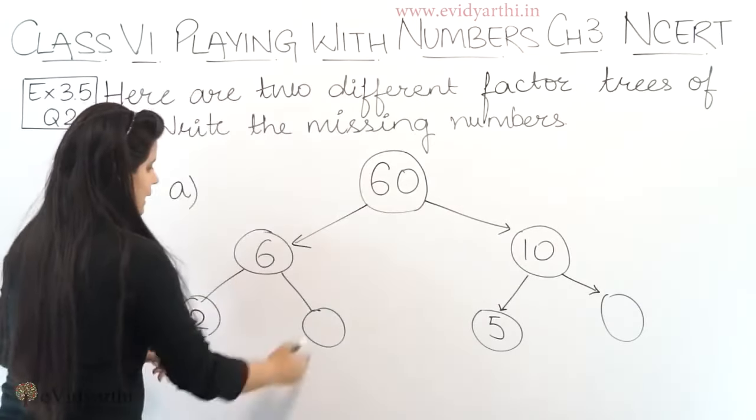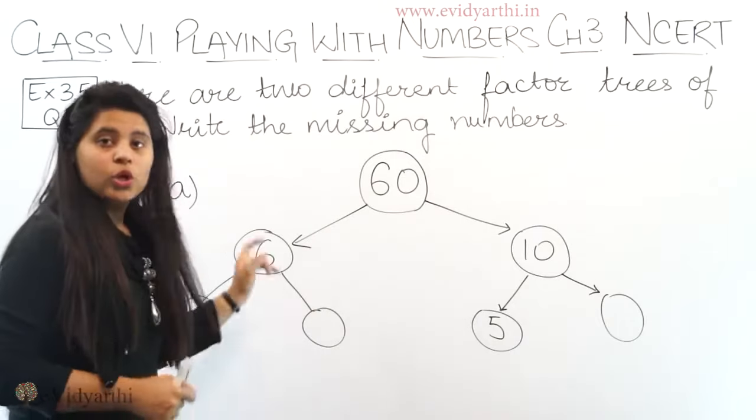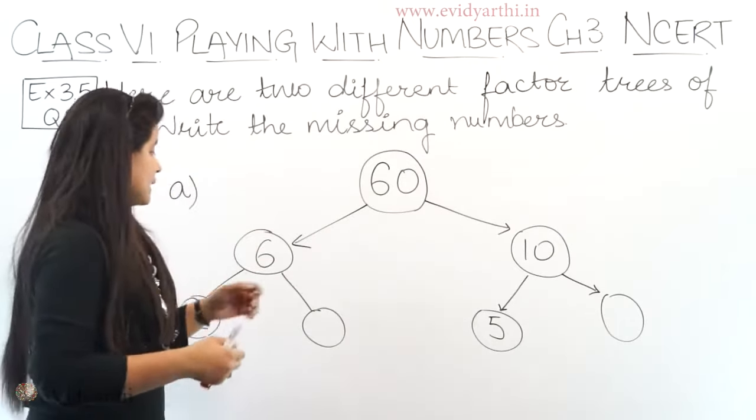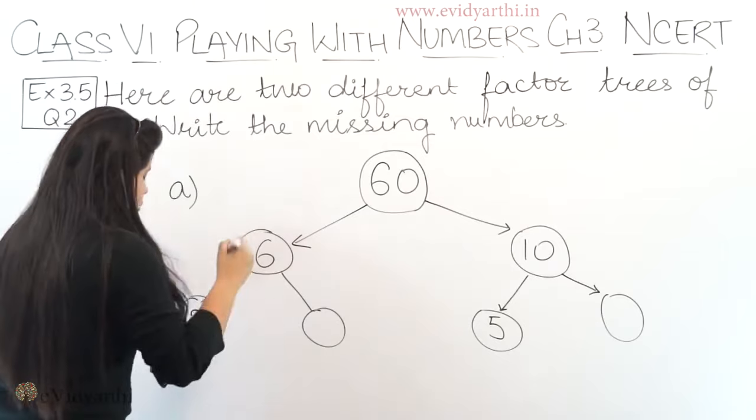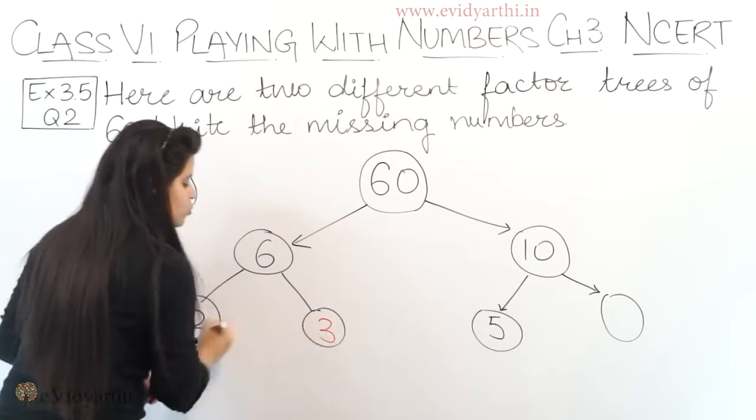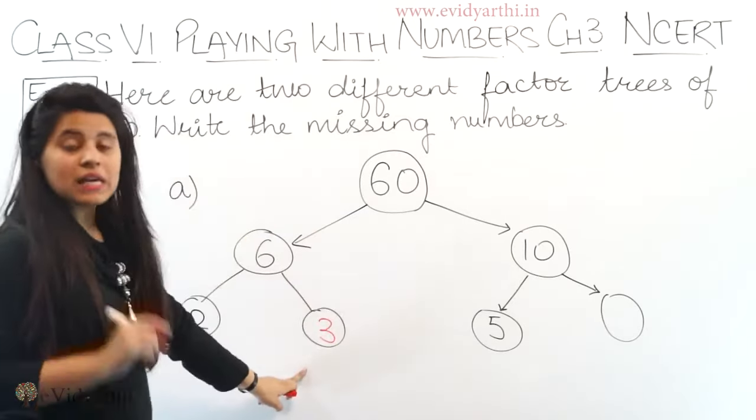Next, we expand 6. One factor we already have is 2. So what do we multiply 2 by to get 6? 2 into 3. 2 threes are 6, so one factor will be 3.